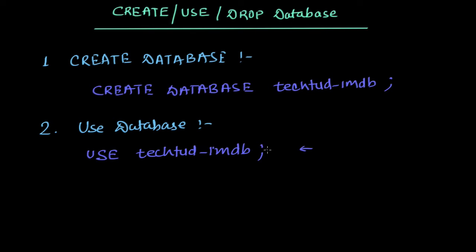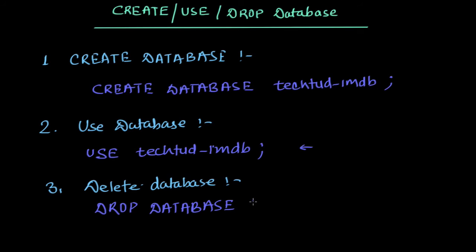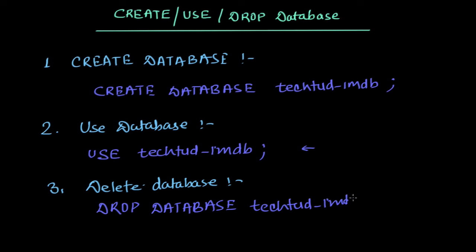Once you run the USE command, it will say the database has been changed and you are now operating on that database. If you want to delete a database, the command is DROP DATABASE followed by the database name — in our case, DROP DATABASE imdb — and it will delete that database from your server.